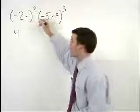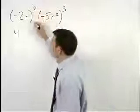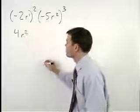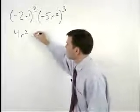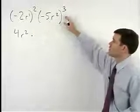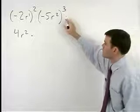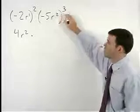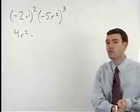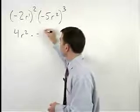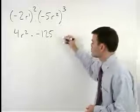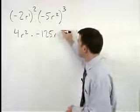Think of r as r to the first and multiplying the exponents we have r squared. Multiply what we have times negative 5 r squared to the third, which simplifies as negative 5 cubed or negative 5 times negative 5 times negative 5, which is negative 125. And multiplying our exponents we have r to the sixth.